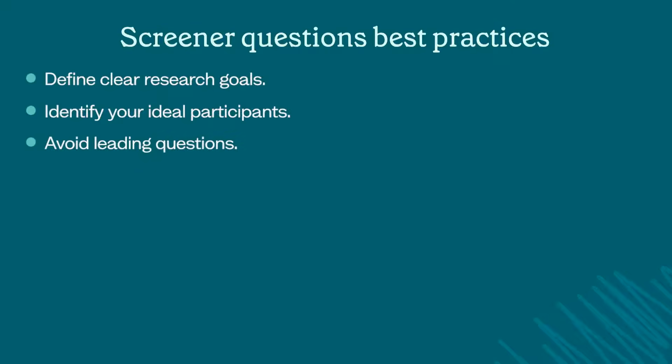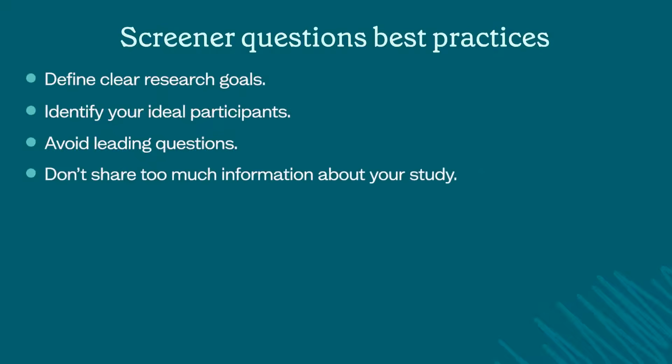Another tip is to avoid asking leading questions. Sometimes the questions we ask can influence participants to answer in a certain way because they're trying to qualify for our studies. So for example, instead of saying 'do you own a Toyota,' you could ask 'which of the following cars do you own' and add a list. Also, don't share too much information about the study to avoid influencing answers. Instead of saying 'we're researching a new fitness app,' you could say 'we're conducting a study on health and wellness apps.'